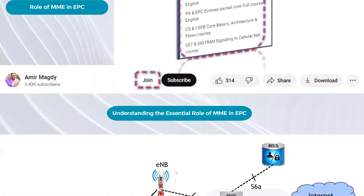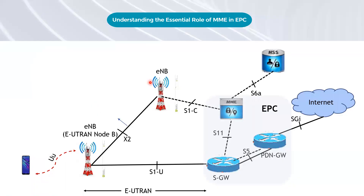The Evolved Packet Core, or EPC, is a critical part of modern cellular networks. It serves as the backbone for all data traffic, ensuring that users can connect to the internet, make calls, and send messages.